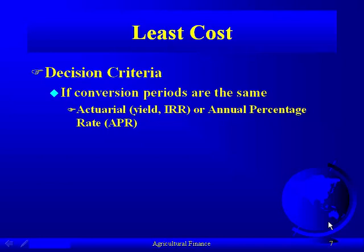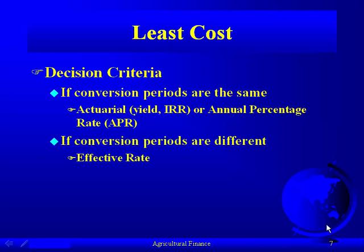You can also use the annual percentage rate, where the actuarial rate is converted to an annual rate. If, on the other hand, the conversion periods are different — a loan compounded monthly versus one compounded annually — then the actuarial rate and the annual percentage rate can potentially give you erroneous answers.